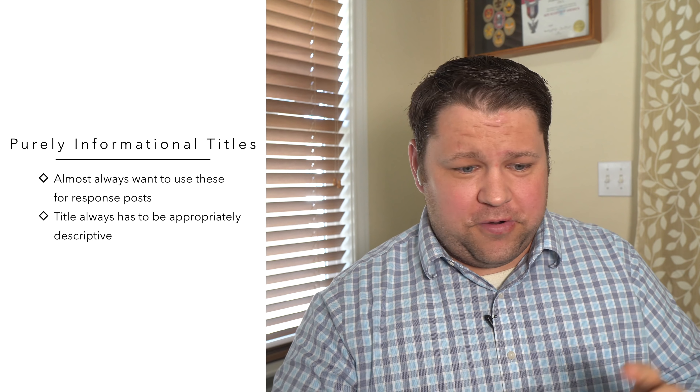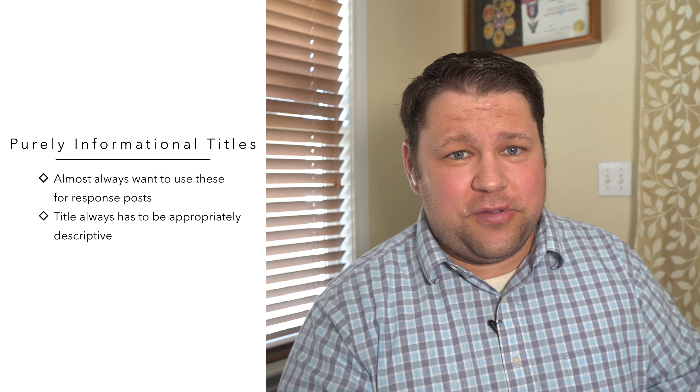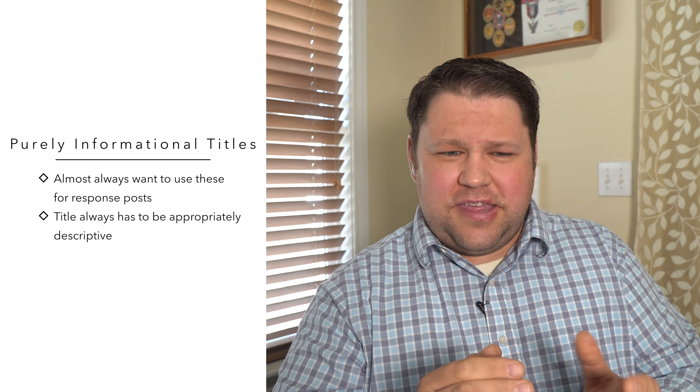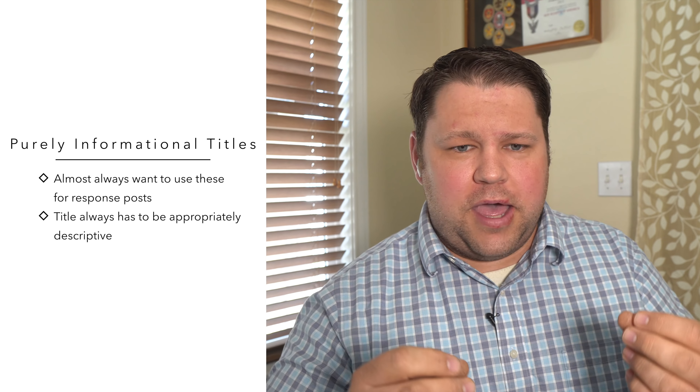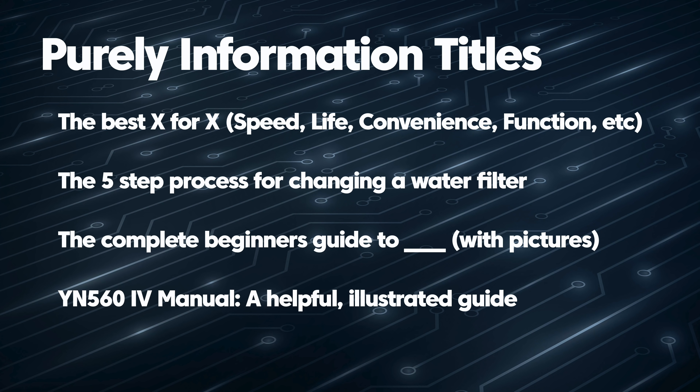The first type is strict information. When we write a response post, in virtually every case this is the kind of title we go for. The most important principle for strict information posts — as well as for some-interest titles — is that the title itself has to be appropriately descriptive. It has to have enough information about what's in the post that I know exactly what to expect when I click on that title.